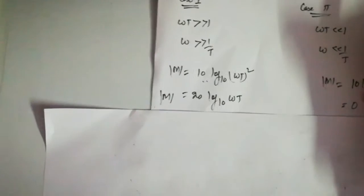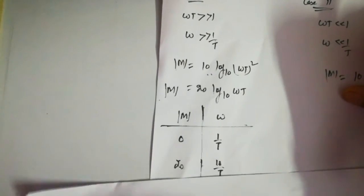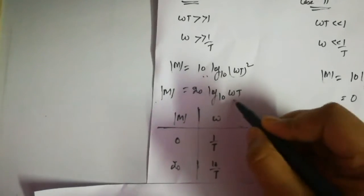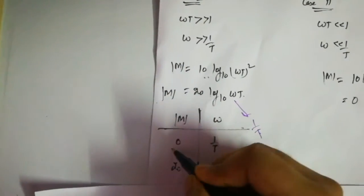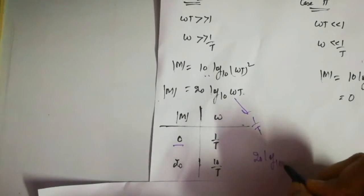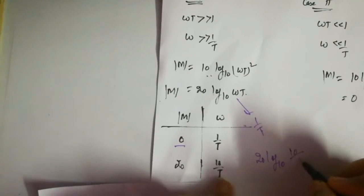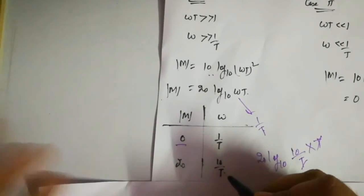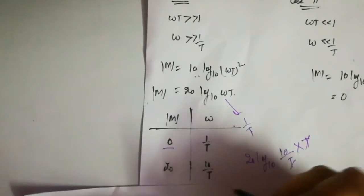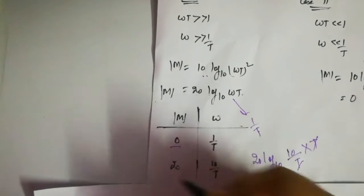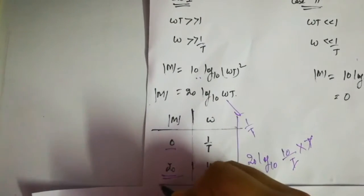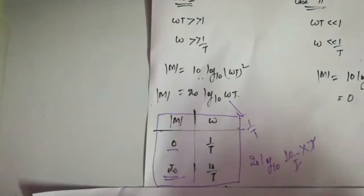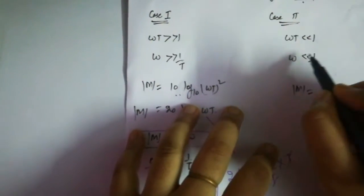Now we will make a table. At ω = 1/T: magnitude = 20·log₁₀(1/T · T) = 20·log₁₀(1) = 0 dB. At ω = 10/T (one decade higher): 20·log₁₀(10/T · T) = 20·log₁₀(10) = 20·1 = 20 dB. So we have +20 dB per decade slope.